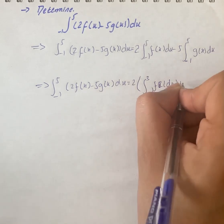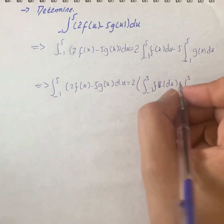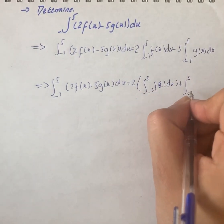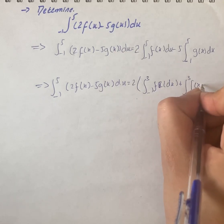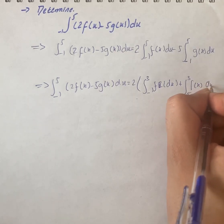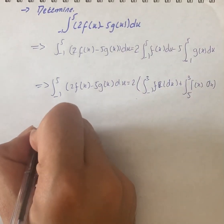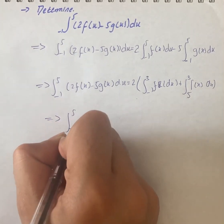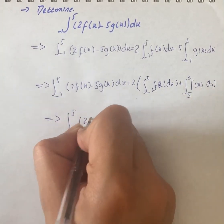Plus the integral from 3 to 5, that is ∫f(x)dx. On simplification, we have ∫[1,5](2f(x) - 5g(x))dx.